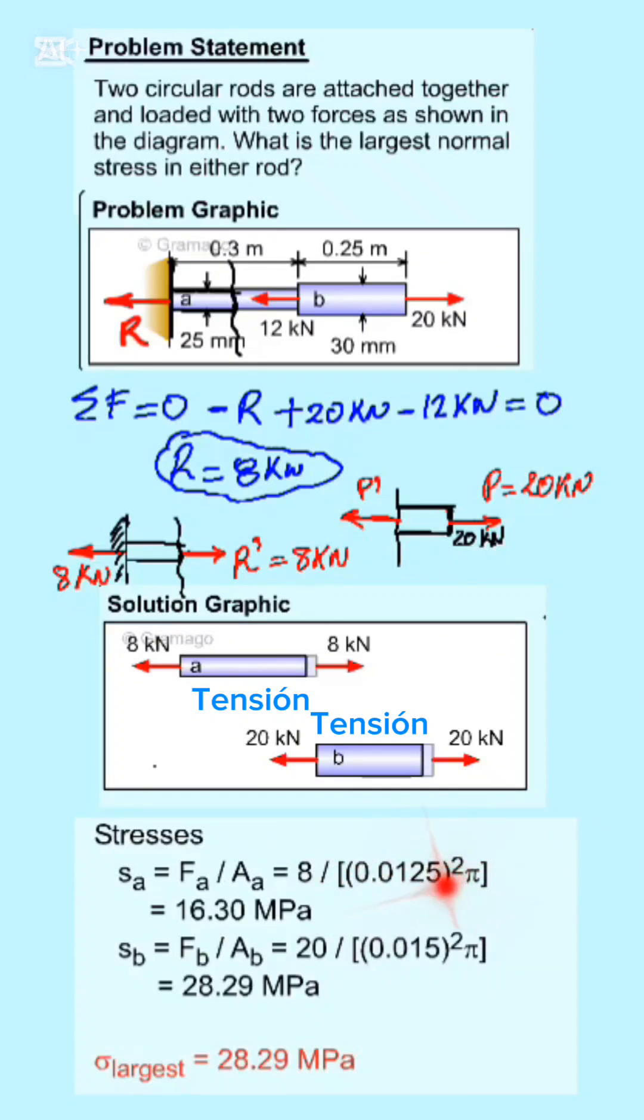The area is pi times radius squared because they tell us it is a circular section. Since the diameter is 25 millimeters, the radius is 0.0125 meters squared. This gives me 16.3 megapascals.